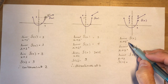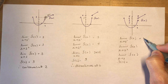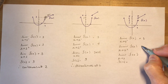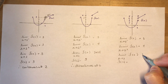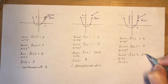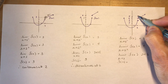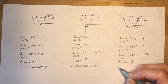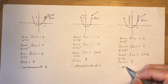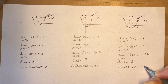In the third case, the limit from the left as x approaches 2 is 3, the limit from the right is 4, so the limit as x approaches 2 does not exist. f(2) happens to be a separate point at 5. This is also discontinuous at x equals 2.